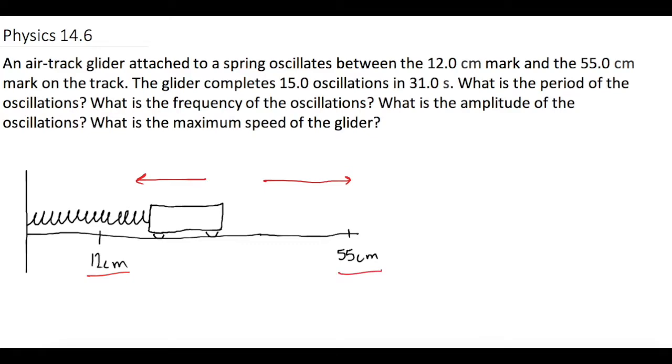So first off, I want to know what is the equilibrium point. If I take 55 plus 12 and then divide that by 2, that'll tell me what the median point is between these two, and that gives me 33.5 centimeters. So right smack dab in the middle is 33.5. This is where when the cart finally comes to rest, it will come to rest at 33.5 centimeters.